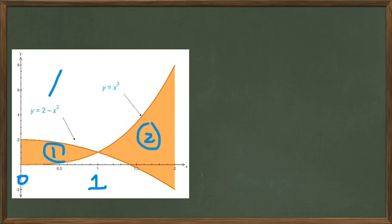the top curve is here, 2 minus x squared, and the bottom curve is y equals x cubed. So that's for region 1, whereas on region 2, the top curve is x cubed, and the bottom curve is 2 minus x squared.